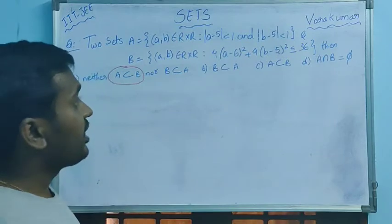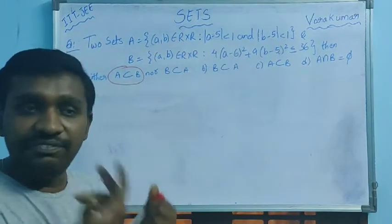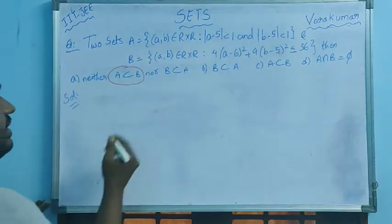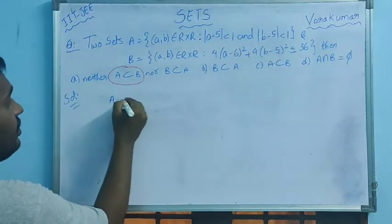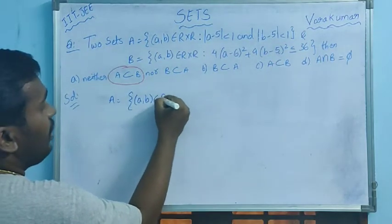Actually by looking at the question it is a little bit puzzling, but if you simplify it is very very easy. See, first set A: set A is equal to what is given, (a,b) belongs to R cross R such that modulus a minus 5 less than 1 and modulus b minus 5 less than 1, right?